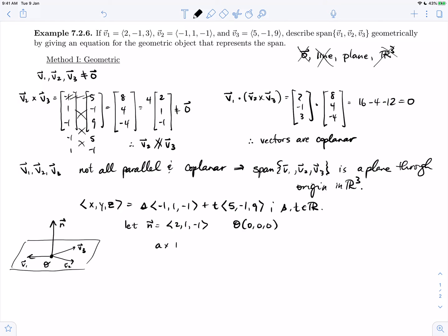If we go into the general equation and use our normal vector as coefficients and plug in the known point, we're going to see that d equals 0, and so 2x plus y minus z equals 0 is a general form equation for the geometric object that is the span.